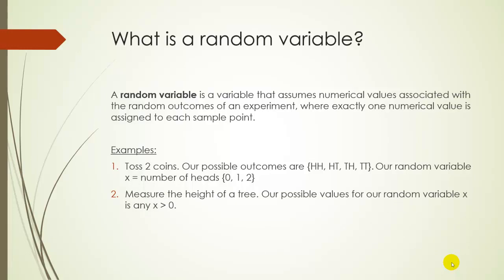Another example might be measuring the height of a tree. So if we randomly select a tree, the possible values could be any X value greater than zero. It could be 10 feet, 20 feet. It could be 10.386 feet. I mean, it could really be any number greater than zero.